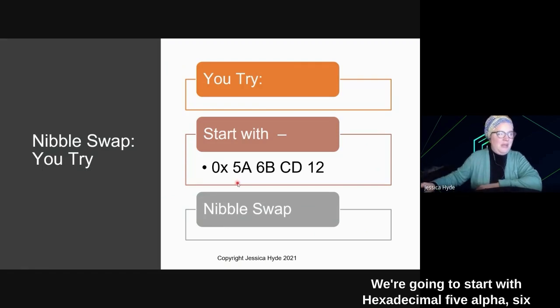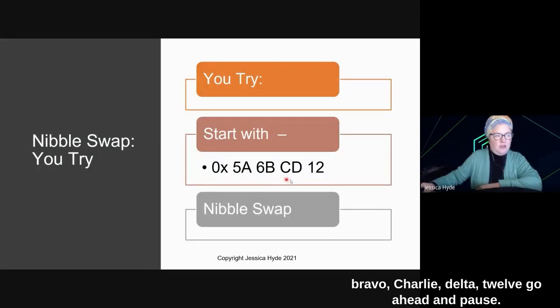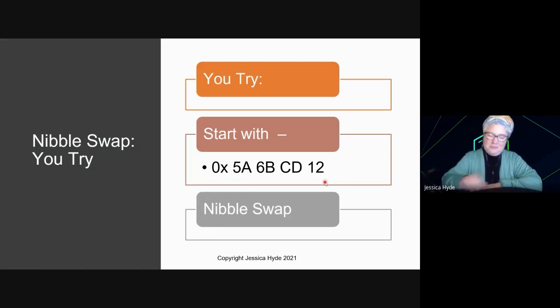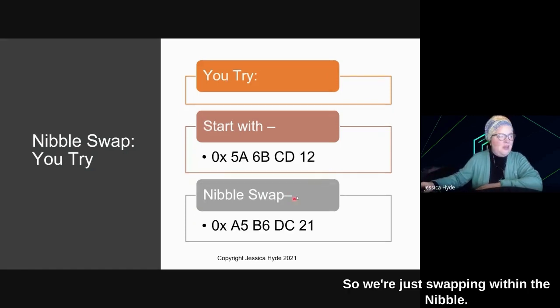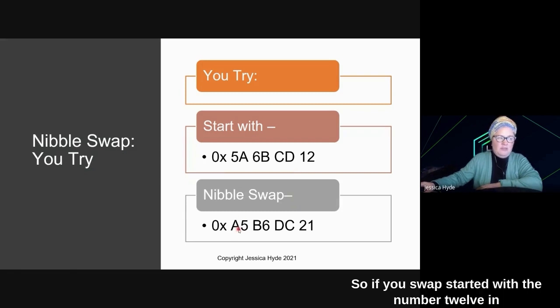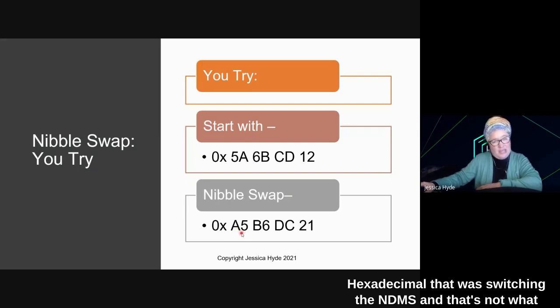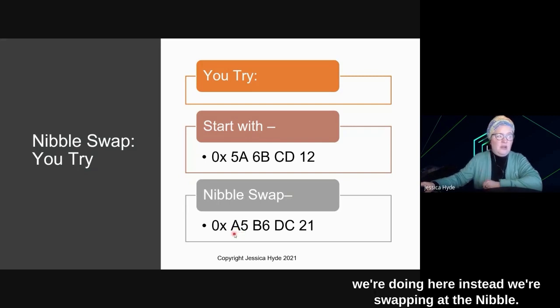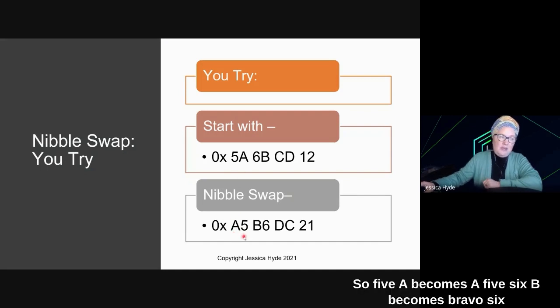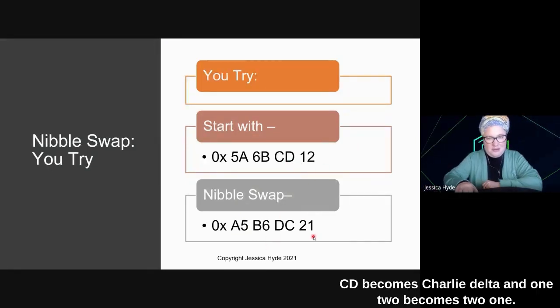Let's see, you try. We're going to start with hexadecimal 5A, 6B, Charlie Delta, 1, 2. Go ahead and pause. Welcome back. Let's talk about this. So, we're just swapping within the nibble. If you started with the number 12 in hexadecimal, that was switching the Endianness, and that's not what we're doing here. Instead, we're swapping at the nibble. This is a nibble swap. So, 5A becomes A5, 6B becomes Bravo 6, CD becomes Charlie Delta, and 1, 2 becomes 2, 1.